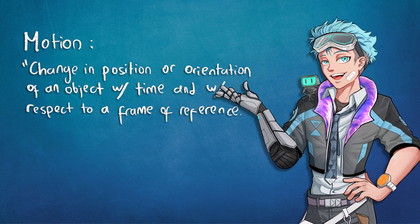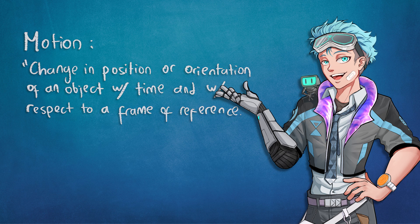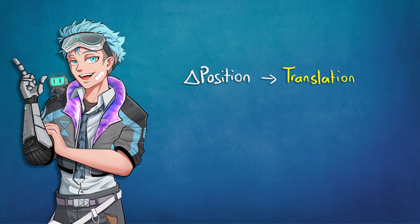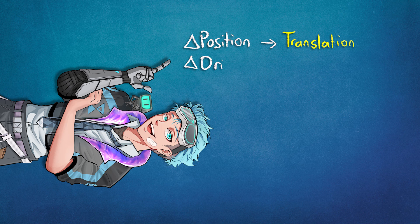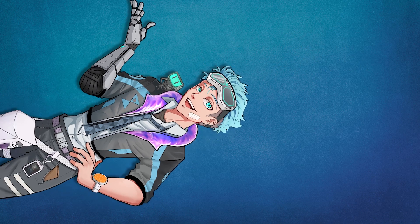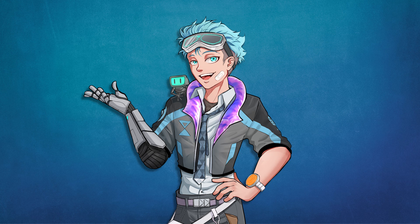Right now I'm not moving. Now I'm changing position, or translating. And now I'm changing orientation, or rotating. These are the two ways any object can move, and any movement is described by how fast they're moving and in what direction.